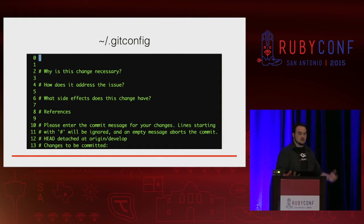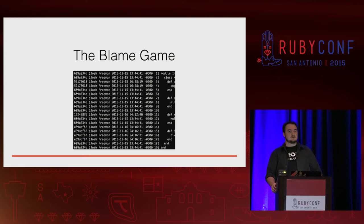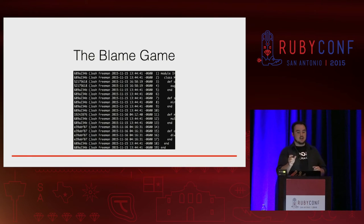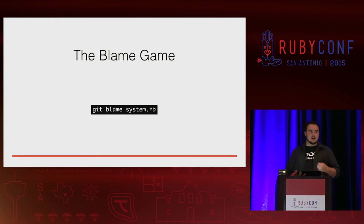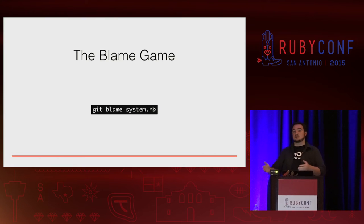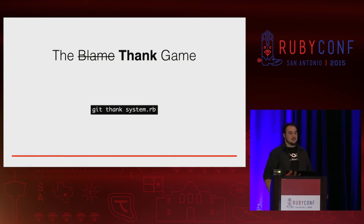Now that you've done all this work and you're writing useful commit messages, when do they become useful? Well, first of all, it's when you start playing the blame game. Git blame is a tool that git provides to look at a specific file — you can see each line, who made that change, and what commit they used to affect that change. It's an unfortunate name because it always gives an accusatory tone. So I've created an alias where git thank actually runs git blame.